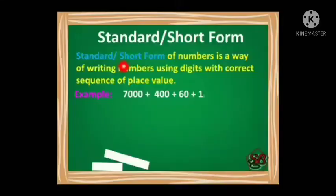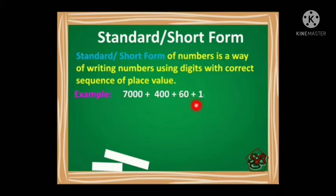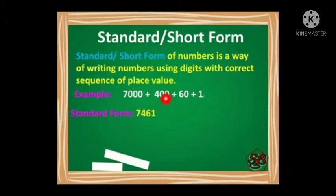Expanded or short form of numbers is a way of writing numbers using digits with the correct sequence of place value. We discussed how to write the expanded form of a given number. Now it is the reverse — expanded form is given to us and we have to write the short form. For example, 7000 plus 400 plus 60 plus 1. The standard form of this will be 7, 4, 6, 1 — that is 7461, arranging them according to their place values.